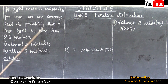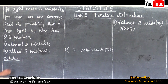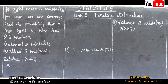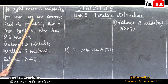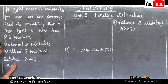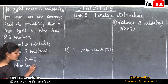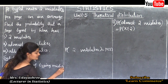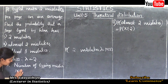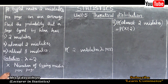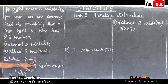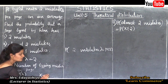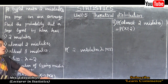In our problem, the given observation is two, so here two is lambda — lambda is equal to two. X is the value of the variable. Since this problem is based on typing mistakes, x is the number of typing mistakes per page. X follows Poisson distribution with the parameter lambda, and here lambda is two, so we write: x follows Poisson with parameter lambda equal to two.